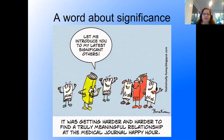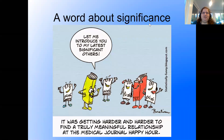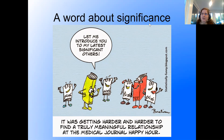A quick word about significance. It seems that journals only report significant results — it's very hard to publish a non-significant result because journals tend to be interested in what's new and significant. But it's just as important to look at non-significant results. Even when we don't reject the null, those results are still just as important.